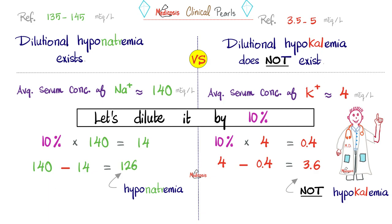Let's take the average here. The average here is about 140. That's the serum sodium concentration. What's the average serum potassium concentration? It's about 4. Okay, fair enough. Now let's dilute each number by about 10% because I drank lots of water, so I diluted both by 10%.